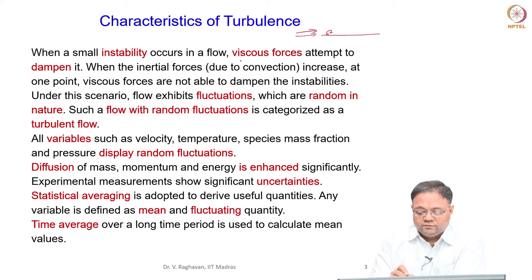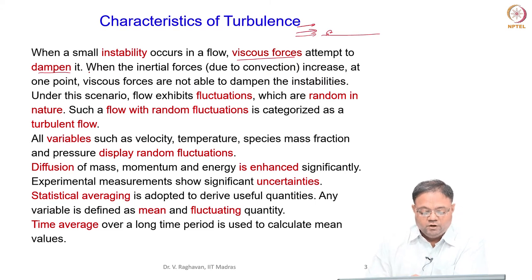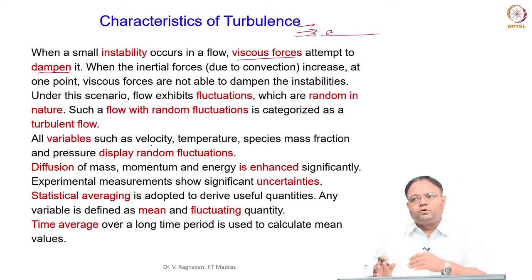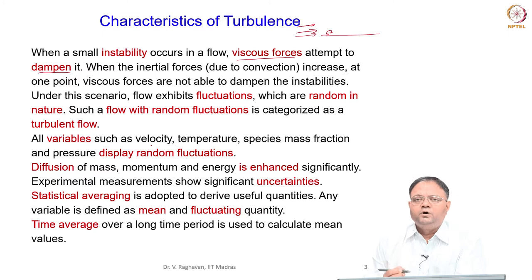When the Reynolds number is low, the viscous forces are able to dampen the fluctuations or instability. When there is a small instability, the viscous forces attempt to dampen it and will be successful in dampening it. The flow will remain without any major fluctuations — there may be steady vortex shedding, but chaotic fluctuations will not be present.